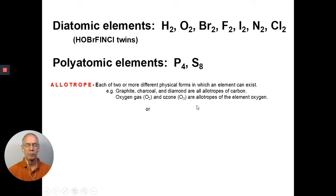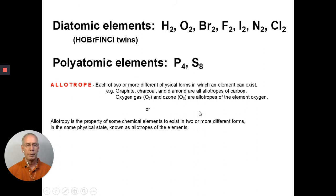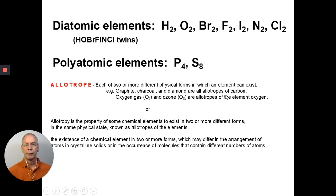Here's another definition from an online source of an allotrope. Allotropy is the property of some chemicals, chemical elements, to exist in two or more different forms, in the same physical state. And these would be then considered elements. So the key is they're the same elements in the same state of matter, either all solids or all liquids or all gases, but they have different properties, different chemical properties. Here's a final definition. The existence of a chemical element in two or more forms, which may differ in the arrangement of atoms and crystalline solids or in the occurrence of molecules that contain a different number of atoms. So for us, if we're keeping it real simple, allotropes are different forms of the same element. Now, let's just compare that to an alloy, and then we'll get into the rest of the lesson.